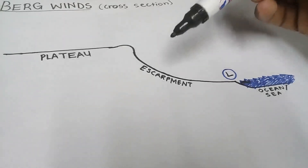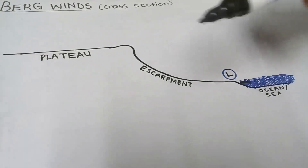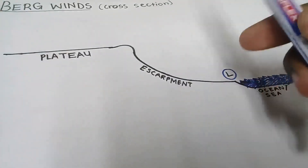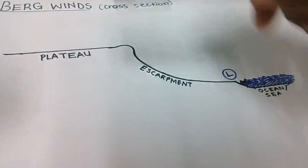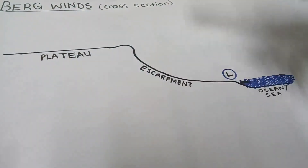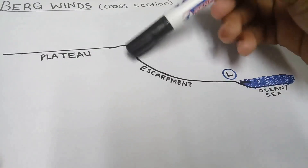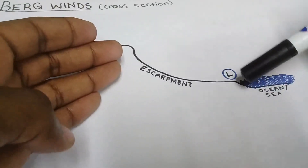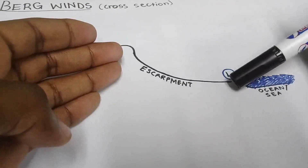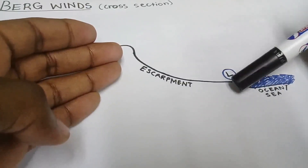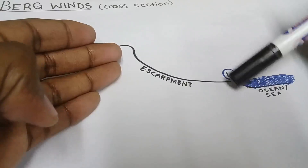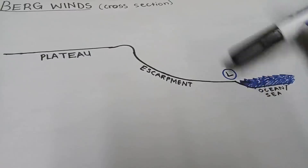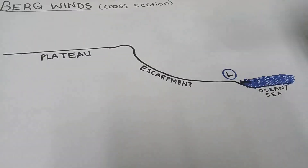But this one is a cross section. On a synoptic weather map, you would draw the interior of South Africa — the plateau, just in the middle, Highveld and so on — and your escarpment going down. The coastal areas include East London, Cape Town, Port Elizabeth, which is also known as Gqeberha, and Knysna.